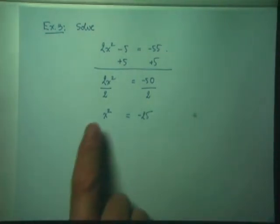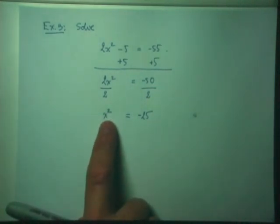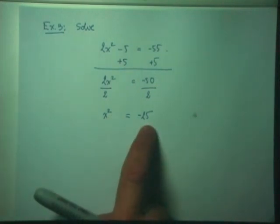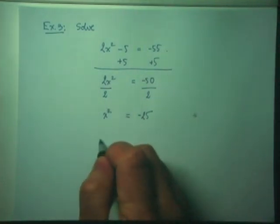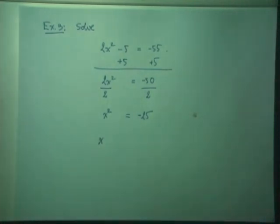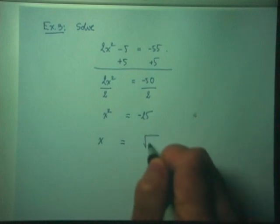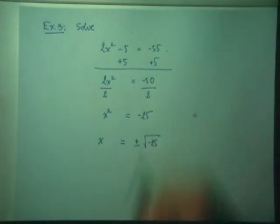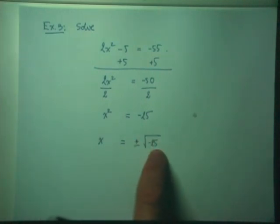Now I'm at ordinary form: one singular X squared equals negative 25 — one perfect square equals a number. Applying the square root property, I ignore the square on the left to get X, and on the right I take plus and minus the square root of negative 25.